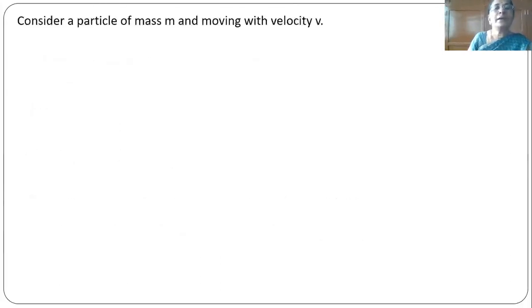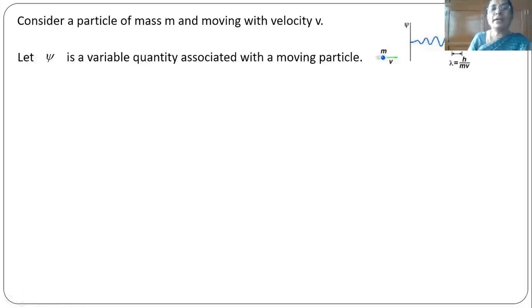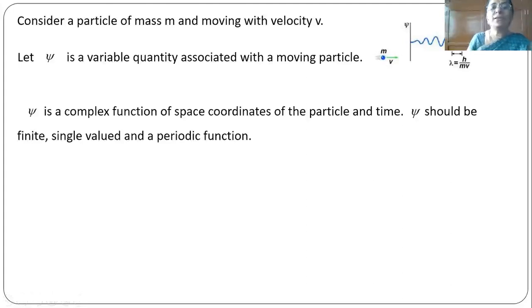Consider a particle of mass m moving with velocity v, traveling along the x-axis. As we know, a moving particle is always associated with matter waves. Where the amplitude of the wave is maximum, we can probably find the particle there. Let psi be a variable quantity associated with this moving particle — a complex function of the space coordinates and time t. Psi should be finite, single-valued, continuous, and also a periodic function.